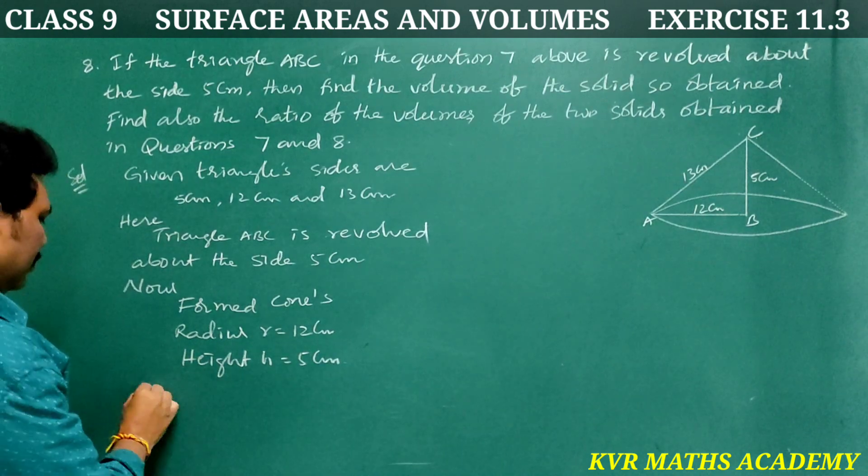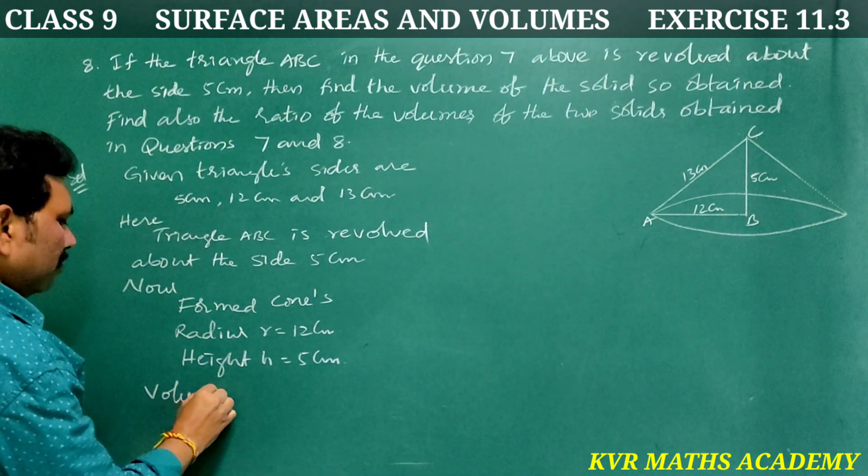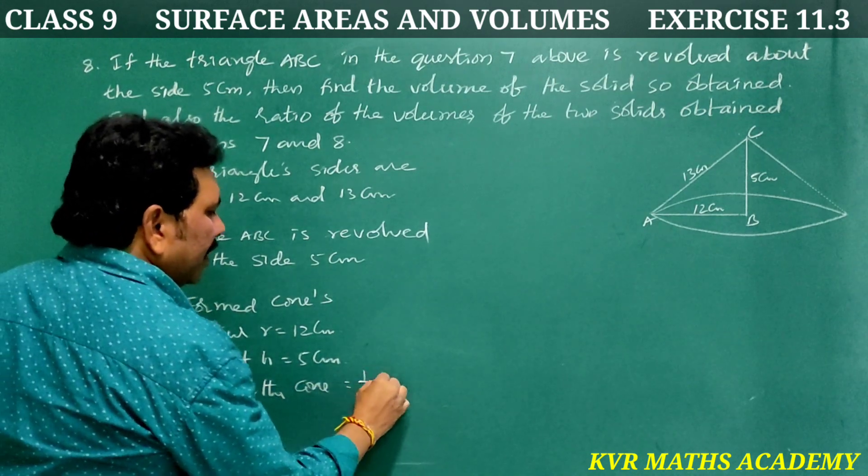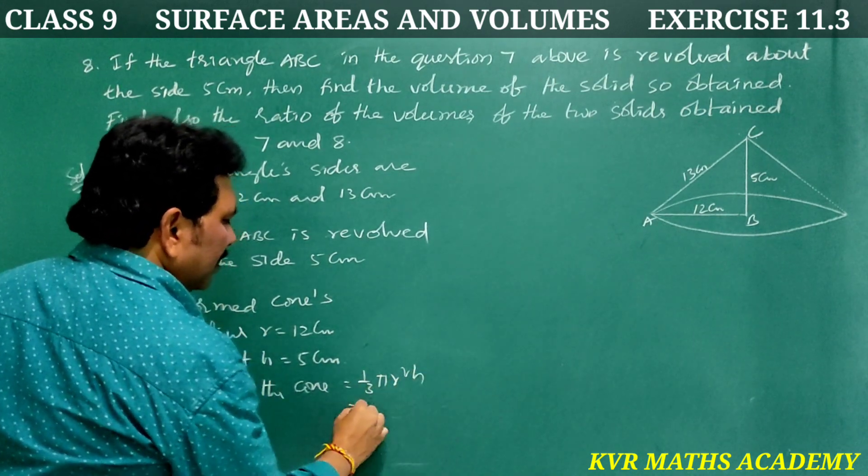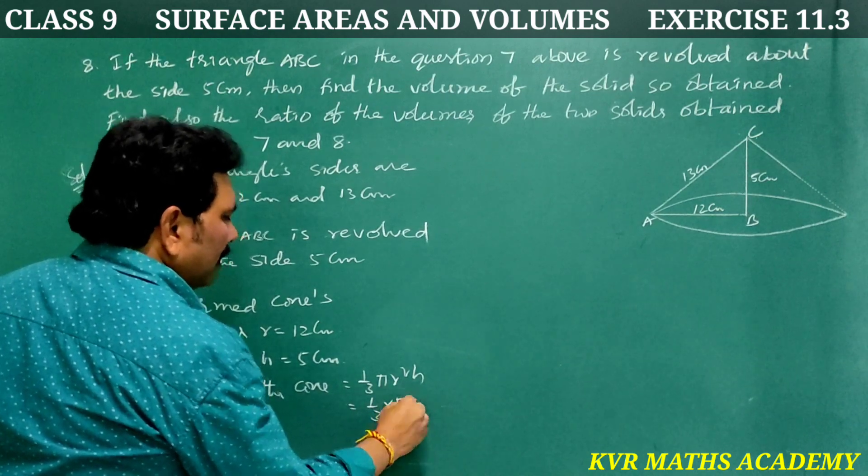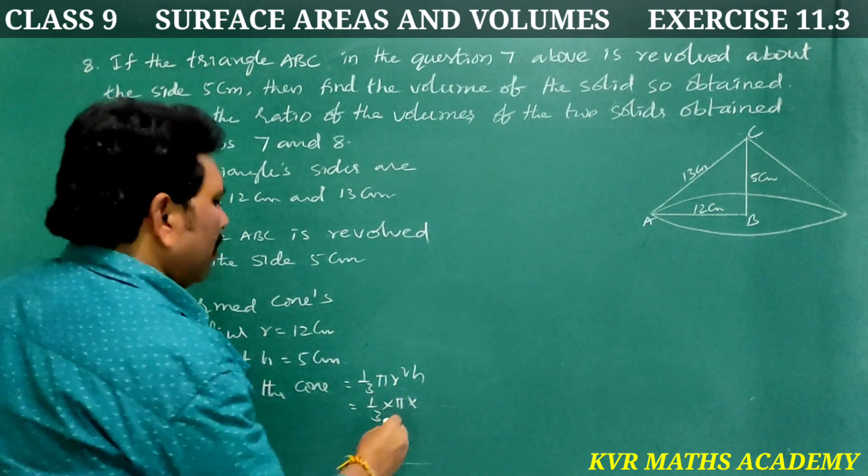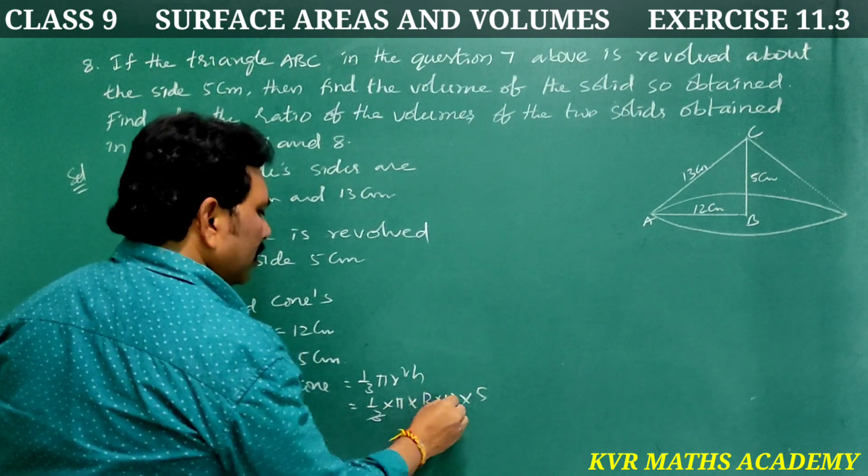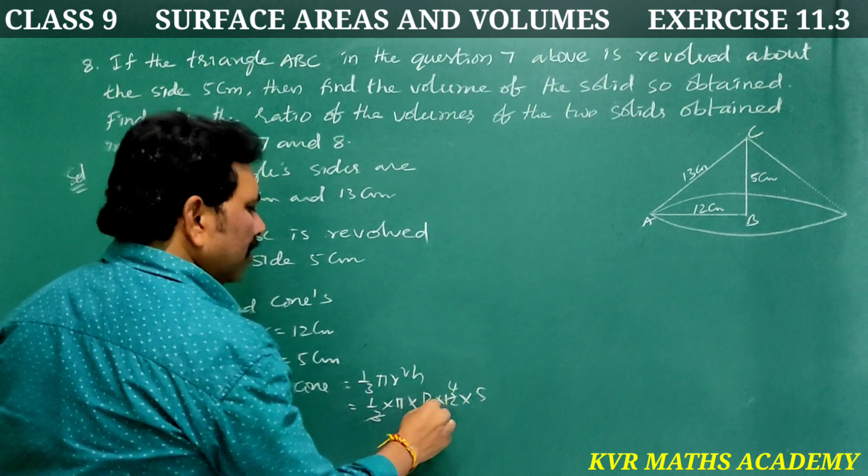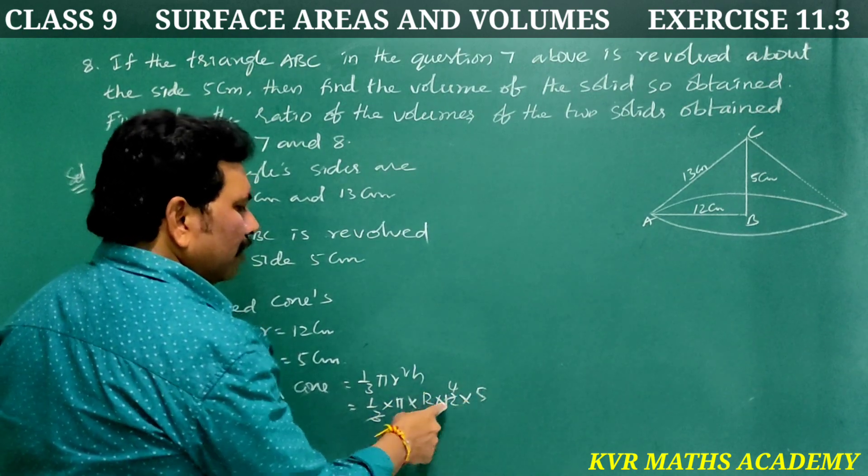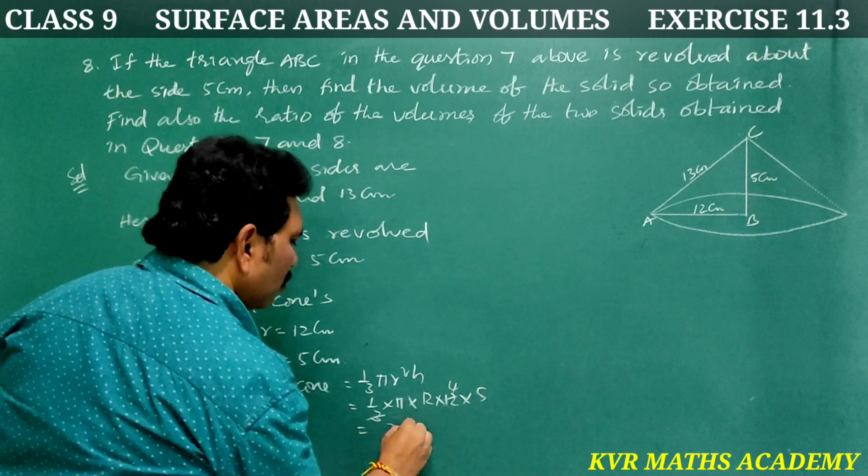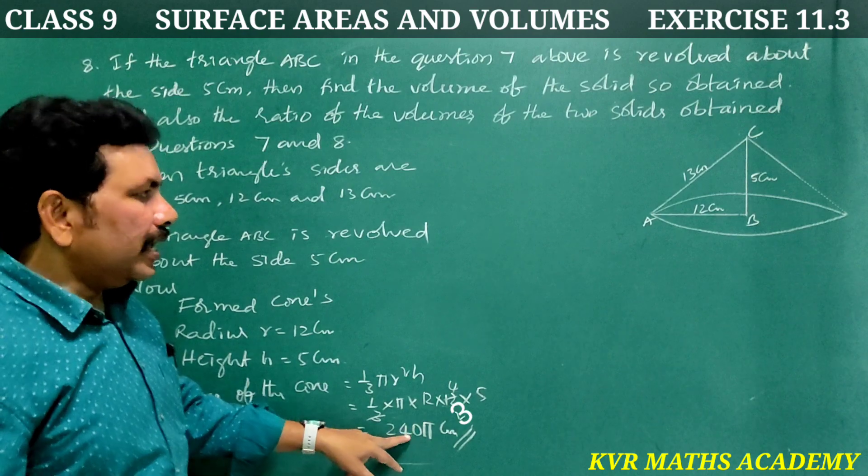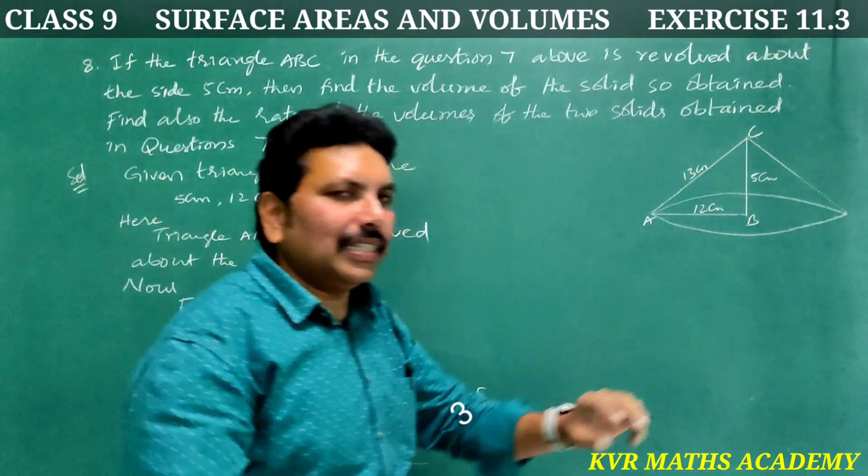Volume of the cone equals one-third π r² h. That equals one-third times π times 12 times 12 times 5. Simplifying: 3 and 12 cancel to give 4, then 4 times 5 equals 20, and 20 times 12 equals 240. So the volume is 240π centimeter cubed.